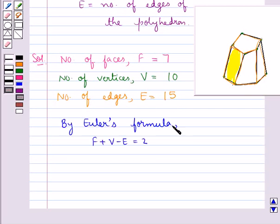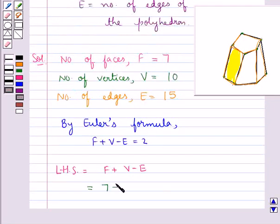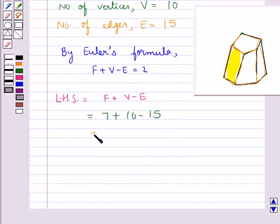By Euler's formula we have F plus V minus E equals 2. We consider the LHS, that is F plus V minus E, and now we substitute the values. This becomes 7 plus 10 minus 15, which equals 17 minus 15, and this is further equal to 2, that is equal to the RHS of Euler's formula.